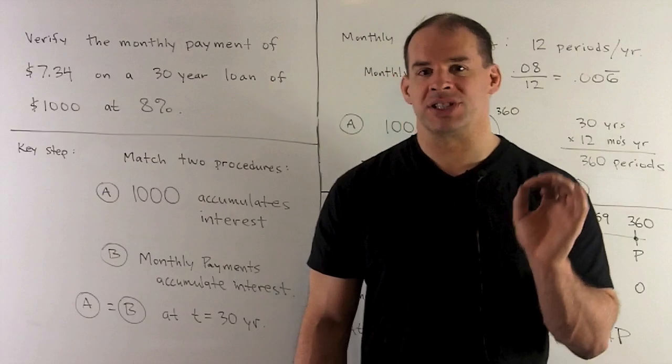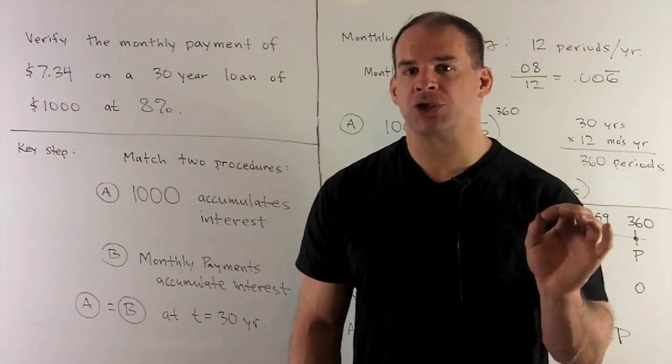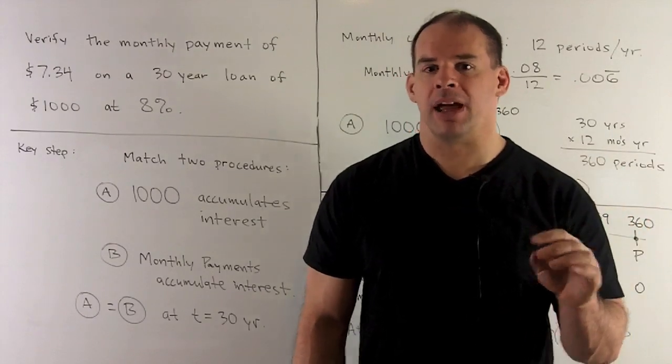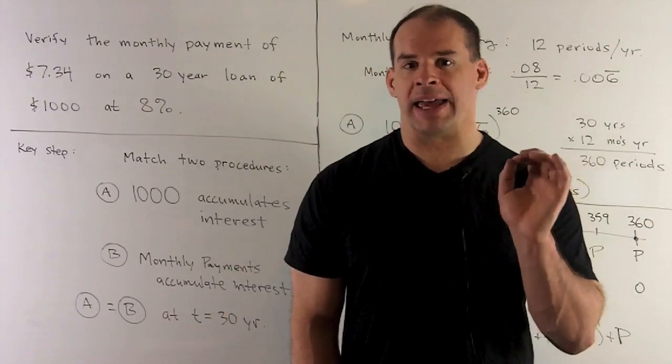So what we want to do instead is just separate into two cash streams. For the first cash stream, we assume we're going to invest $1,000 at 8% and just let it ride for 30 years. So we don't do anything except apply interest.